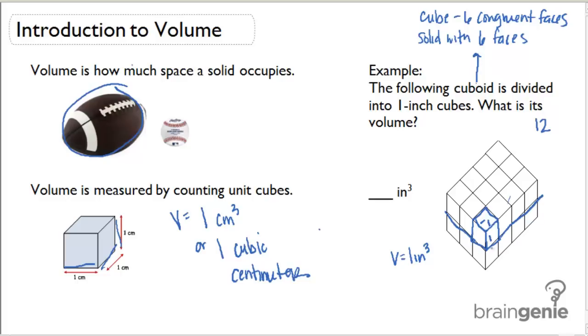The bottom row is the exact same size as the top row, so I'm just going to have 12 more. If I add up 12 plus 12, I get 24. Therefore, the volume of the cuboid is 24 cubic inches, or 24 inches cubed.